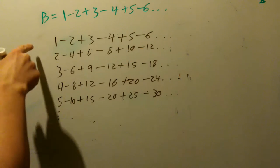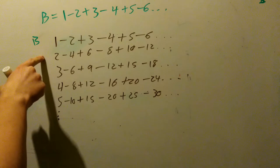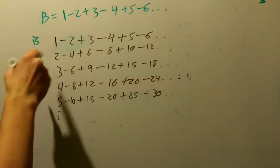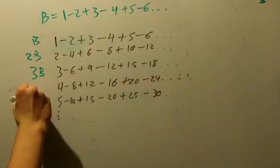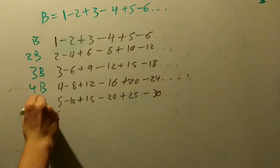And I want to start that this is B. This is 2B, because everything multiplied by 2, 3B, 4B, 5B, etc.